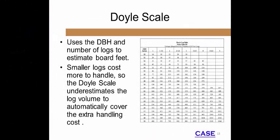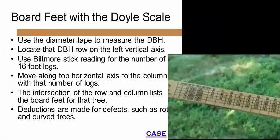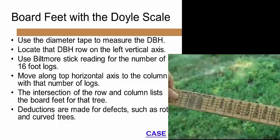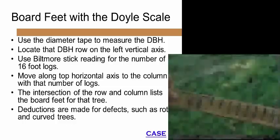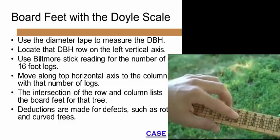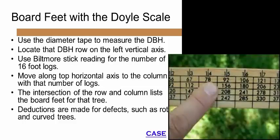The Doyle scale estimates the lumber yield from a log. For smaller logs, the scale underestimates the actual volume. Smaller logs cost more to handle, so rather than subtract from the actual footage, the Doyle scale automatically accounts for extra handling cost. To use the scale, first measure the average diameter of the small end of the log inside the bark in inches. Locate that row on the scale. Next, measure the length of the log in feet and move to that length column. Where the two measurements intersect, the result is the board footage of that log. This process must be repeated for each log.